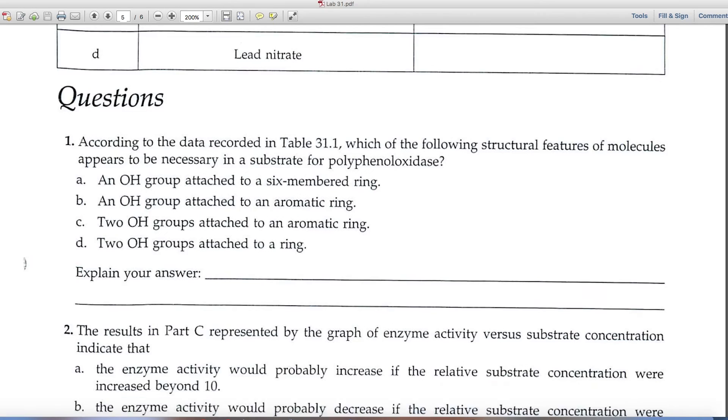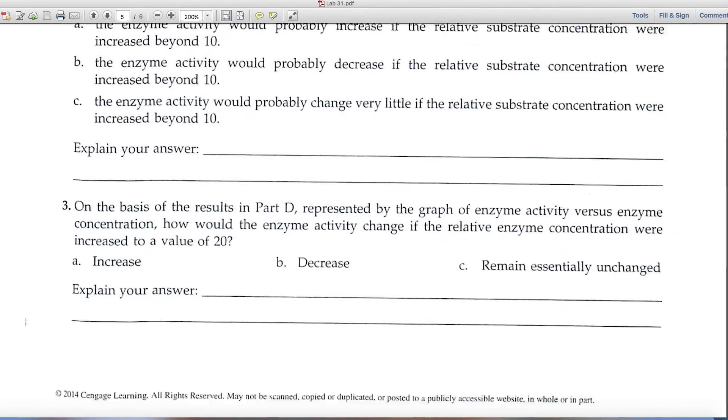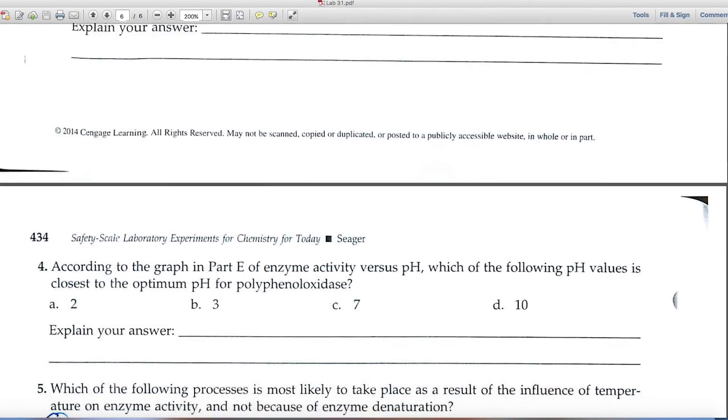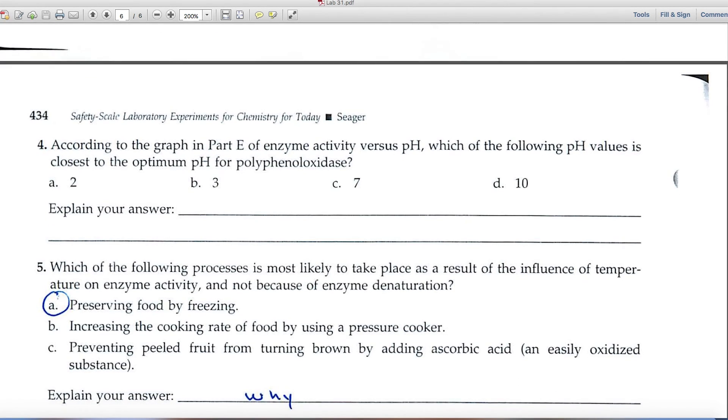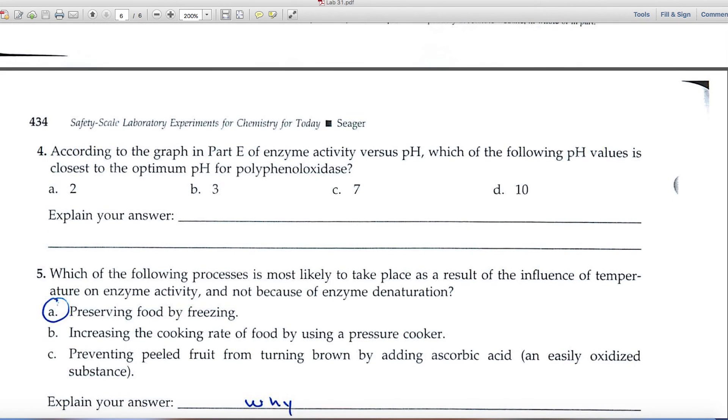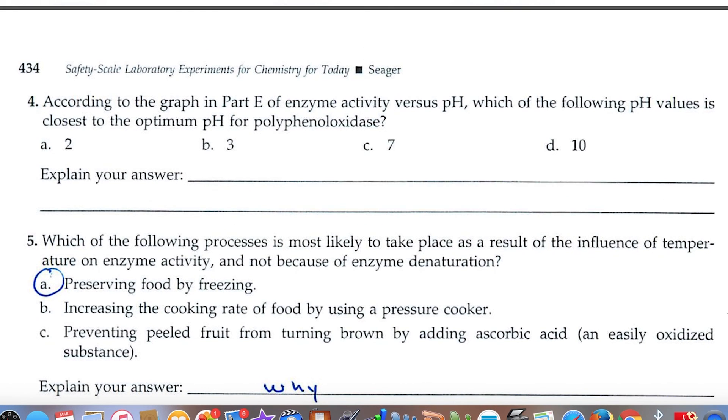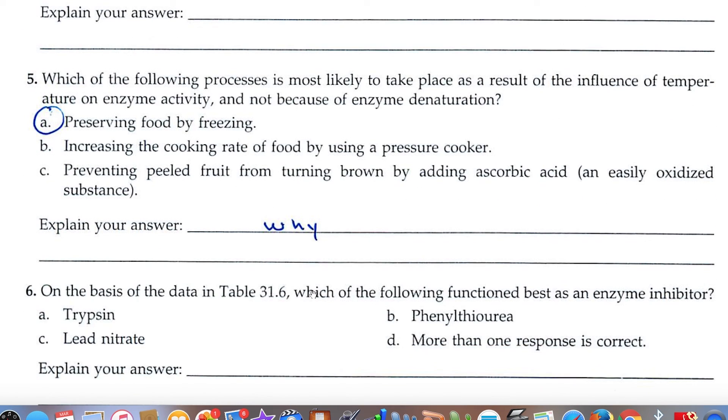Then we come to the questions at the end of the chapter. These are pretty much based upon the graphs that you draw, except for number 5. It says, which of the following processes is most likely to take place as a result of the influence of temperature on enzyme activity? I'll tell you the answer here. It's A, that we're after, but I'd like you to explain why, if you would.